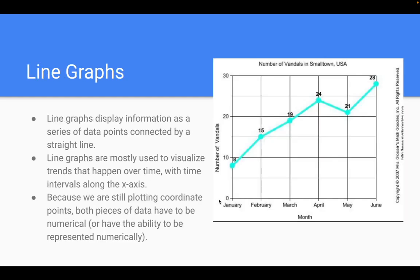Alright, your next type of display is a line graph. These show a series of connected points connected with a straight line. These are normally used to visualize trends that happen over time with intervals that go along the x-axis. So notice time is spread across x, whereas the number of occurrences goes up on the y. So because we are still plotting coordinates, both pieces of data have to be numerical or have to be able to be represented numerically. So remember, some things do still have to be quantitative in nature for certain types of displays to be used.